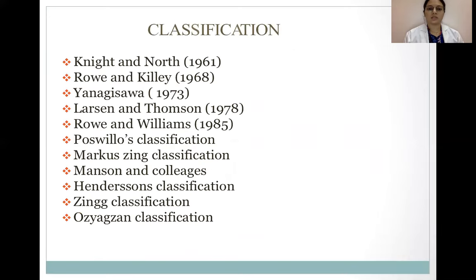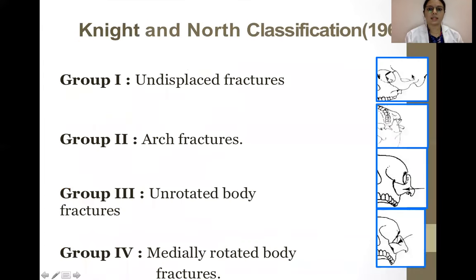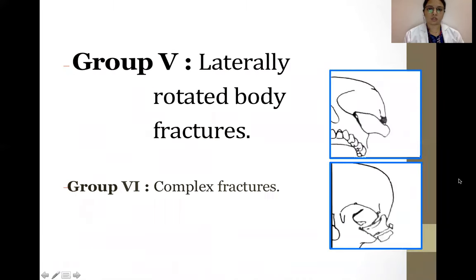There are several classifications. The Knight and North classification: Group 1 is undisplaced fractures, Group 2 is arch fractures, Group 3 is unrotated body fractures, Group 4 is medially rotated body fractures, Group 5 includes laterally rotated body fractures, and Group 6 is complex fractures.